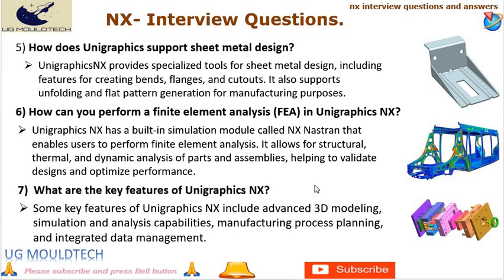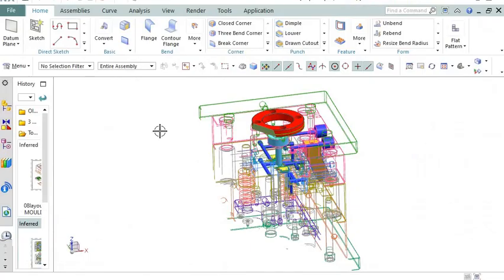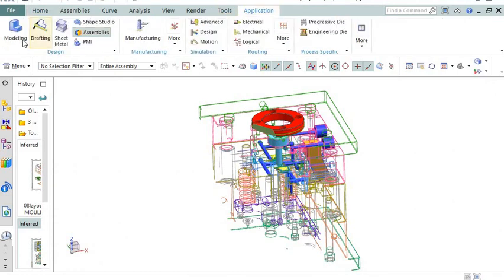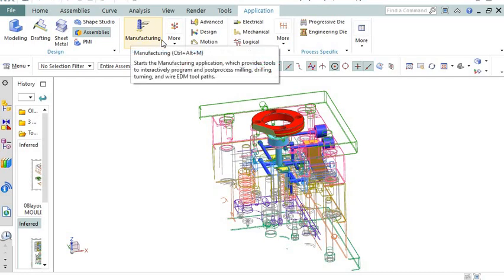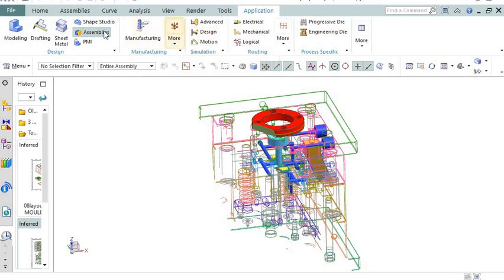Next point in NX interview is number 7. What are the key features of UniGraphics NX? Some key features of UniGraphics NX include advanced 3D modeling, parametric modeling, assembly design, drafting and documentation, simulation and analysis capabilities, manufacturing process planning, and integrated data management.